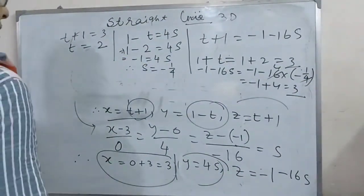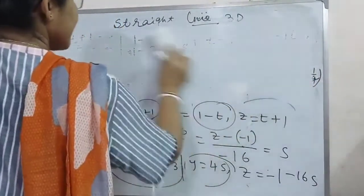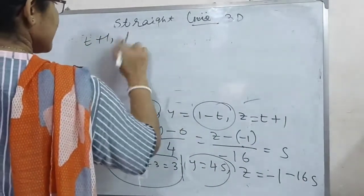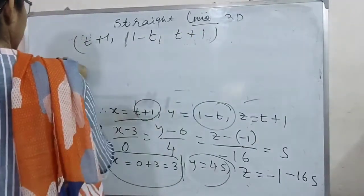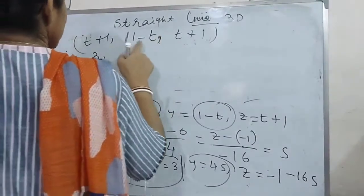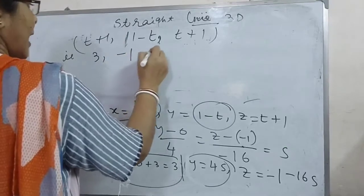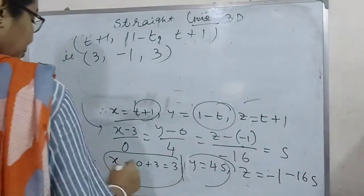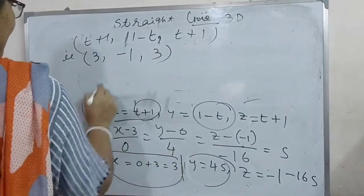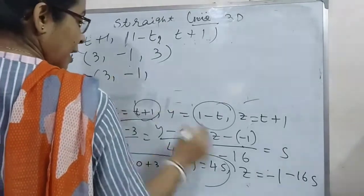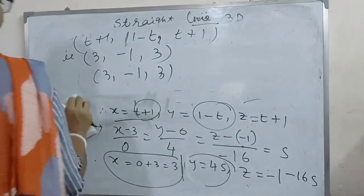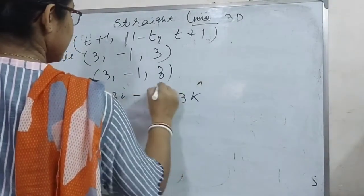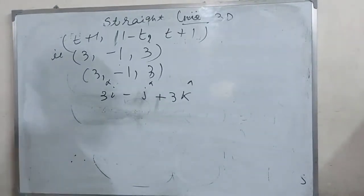The intersecting point is (t plus 1, 1 minus t, t plus 1). With t equal to 2, this gives (3, minus 1, 3). From the second line's parametric form with s equal to minus 1 by 4, we get the same point: (3, minus 1, 3). Therefore, the position vector of this point is 3i minus j plus 3k. I will end here.